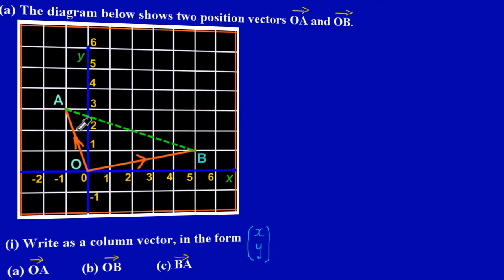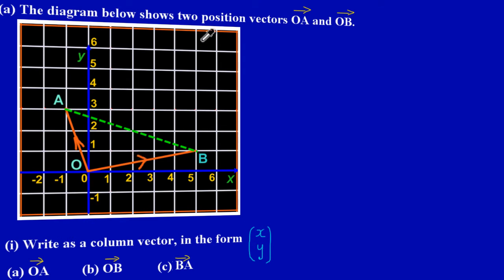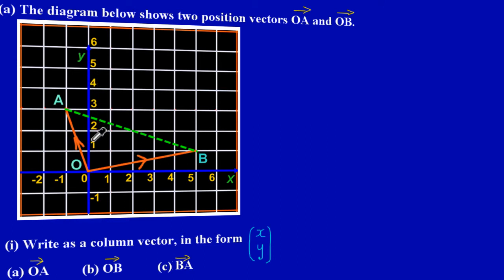On our graph we have the diagram on our Cartesian plane. A position vector simply means you're moving from the origin to a point. On the Cartesian plane, if I'm moving to my left on the x-axis that would be a negative direction; moving to my right is a positive direction. Moving downward on my y-axis is negative, and moving upward is positive. Keep those critical things in mind.